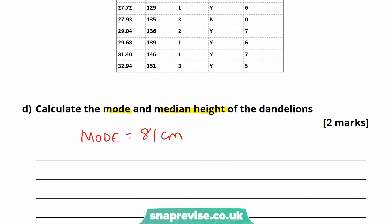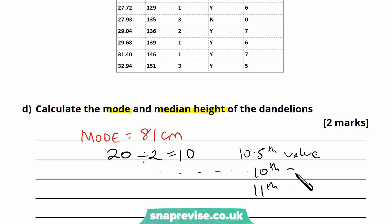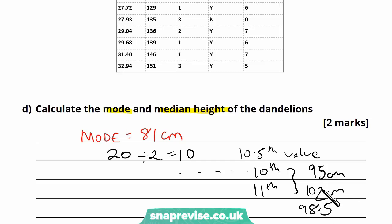To find the median, find the halfway point in the data. With 20 dandelions, the middle is between the 10th and 11th values — that's the 10.5th value. The 10th value is 95 cm and the 11th value is 102 cm. Add them together and divide by two: the median is 98.5 centimetres, which is exactly in the middle of the whole ordered set.